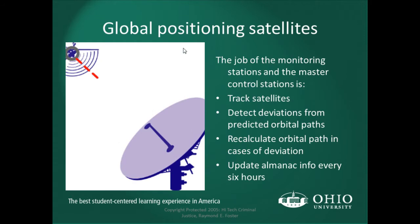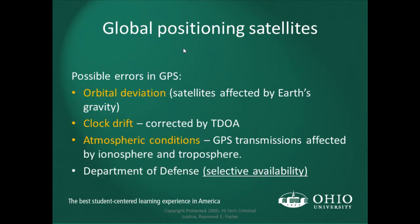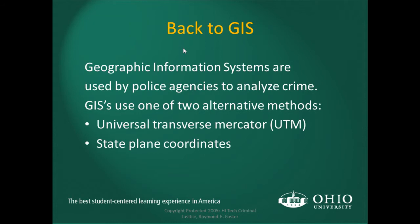Monitoring stations in the master control system track the satellites and detect deviations from predicted orbits. They update that information every six hours to account for any drift. Possible errors in GPS systems include orbital deviation — which is why the almanac is updated every six hours — clock drift corrected by TDOA, and atmospheric conditions that can affect the transmission of signals from global positioning satellites.